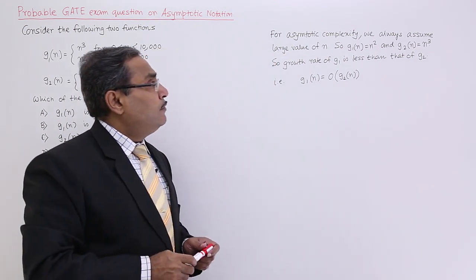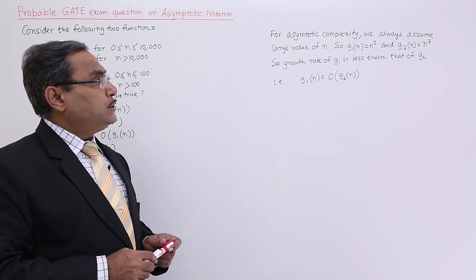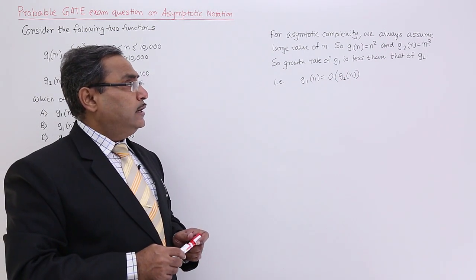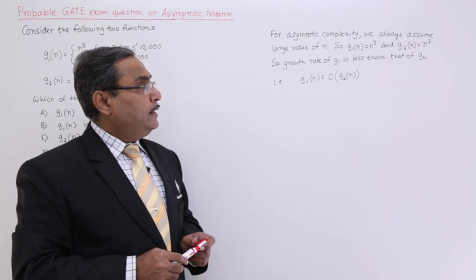That is why I am writing, for asymptotic complexity we always assume large values for n. So, g1(n) equals n² and g2(n) equals n³.